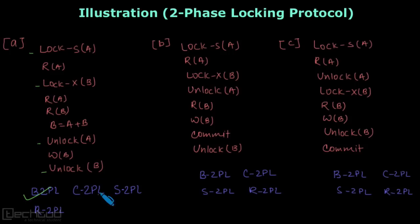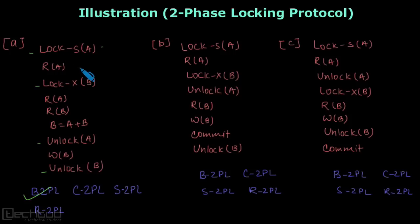Now let's check for conservative 2PL. Conservative 2PL says that all the locks are acquired before the transaction starts. We can see that a lock is acquired and then the operation starts — a read operation is executed. This means that not all the locks are acquired at once, so it is not a conservative 2PL.